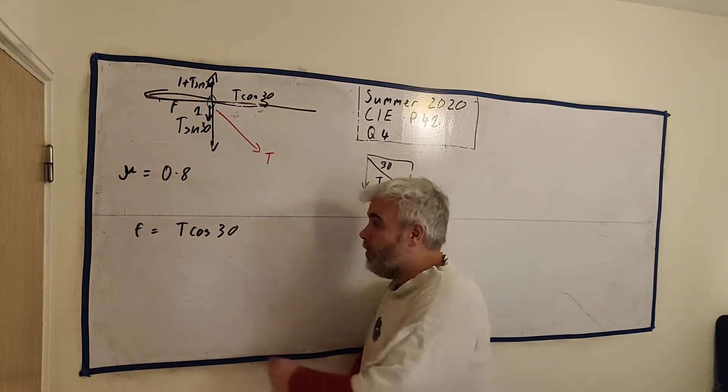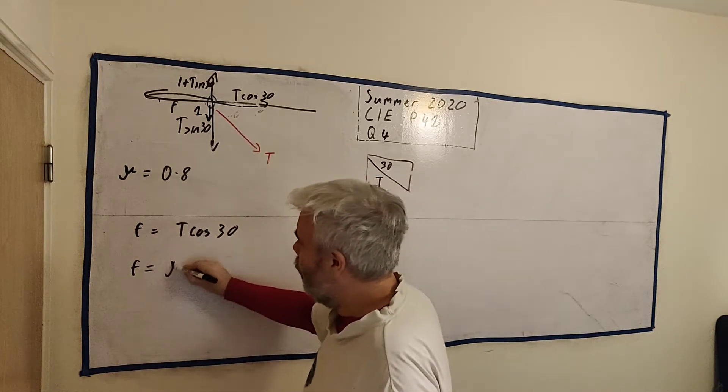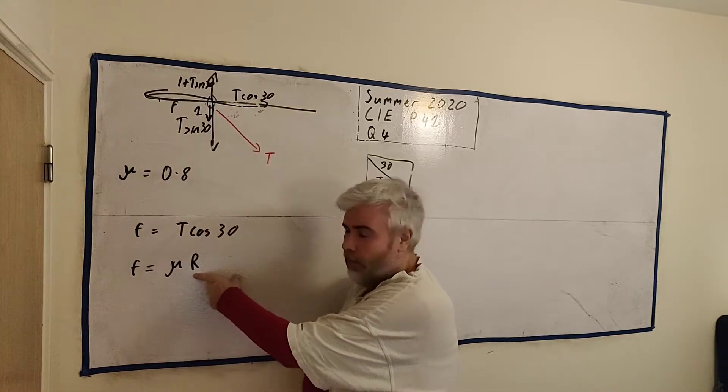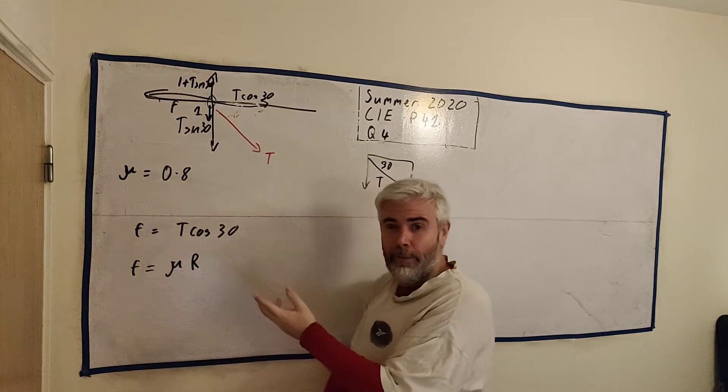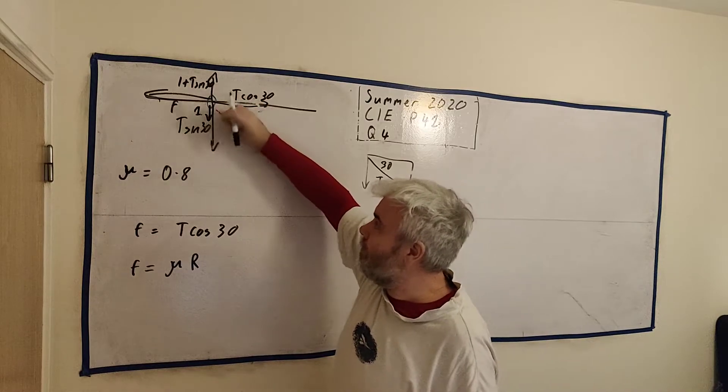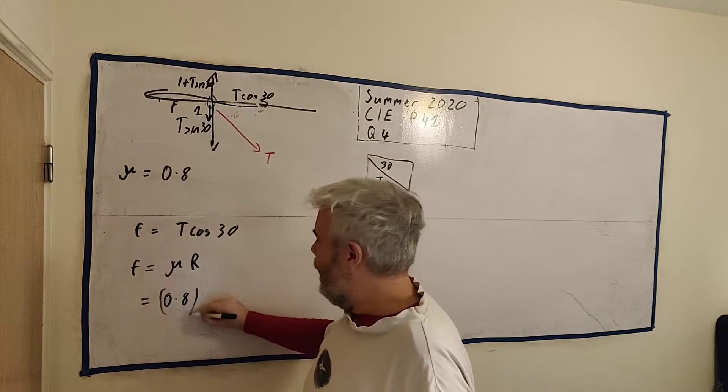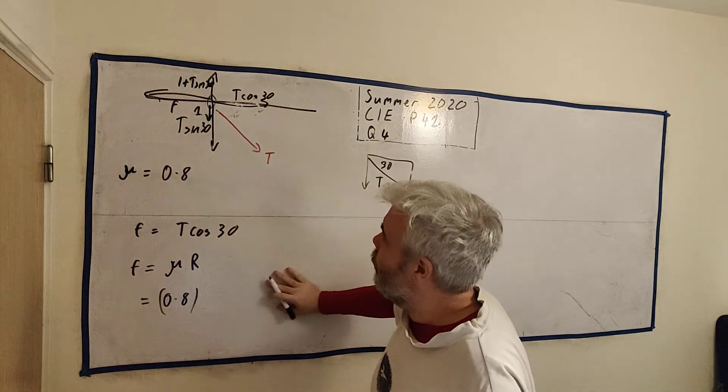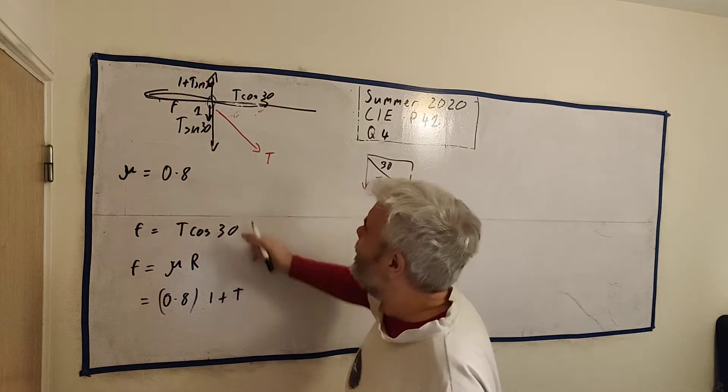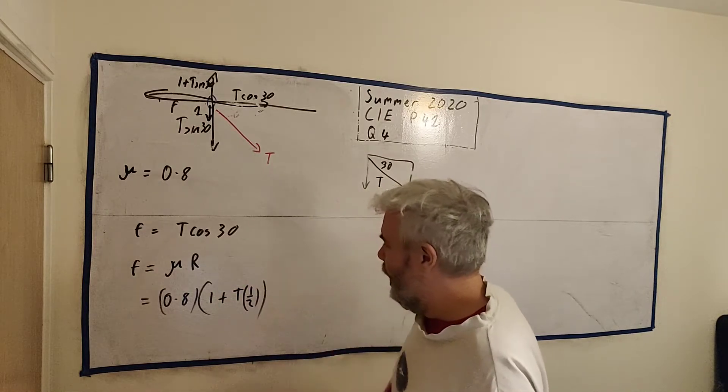But there's a few things we don't know. We don't know F. So is there anything else we can find about F? F is equal to the coefficient multiplied by, we call this sometimes N or sometimes R, the normal. Basically how much, what's the full weight of the object? That's how much force is acting down or up. So this is 0.8. And the total force in this direction is 1 plus T sine 30. Sine 30 is a half. So I'll just put that in as a half. And so that's F.